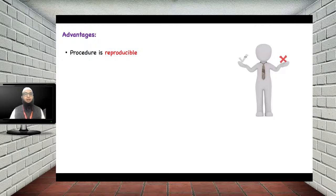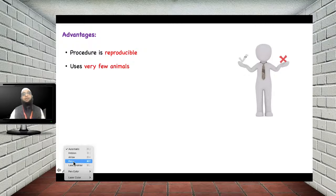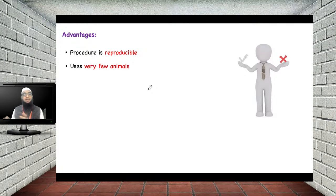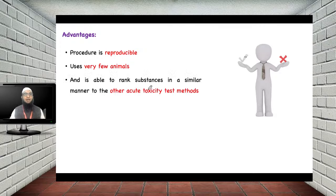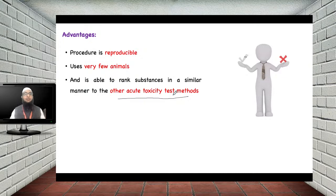The advantages of this method include: the procedure is reproducible; it uses very few animals — if the effect appears at the first dose, no additional animals are needed; and it is able to rank substances from category 1 to 5 in a manner similar to other acute toxicity test methods. These are the advantages of OECD guideline 423.